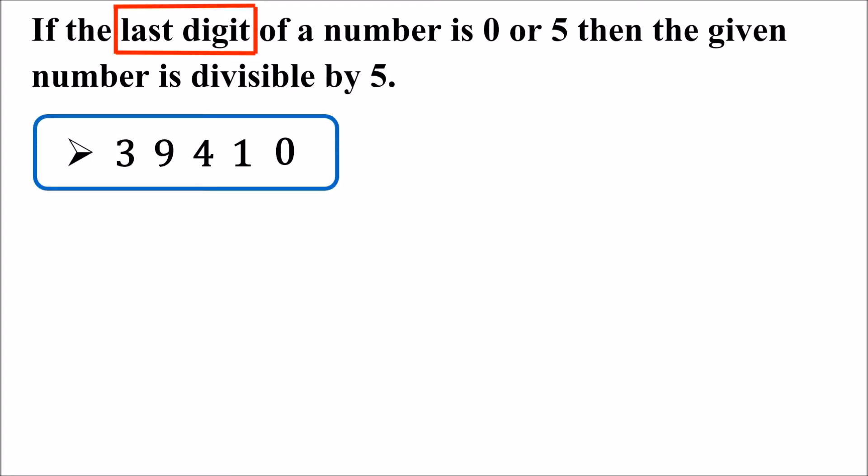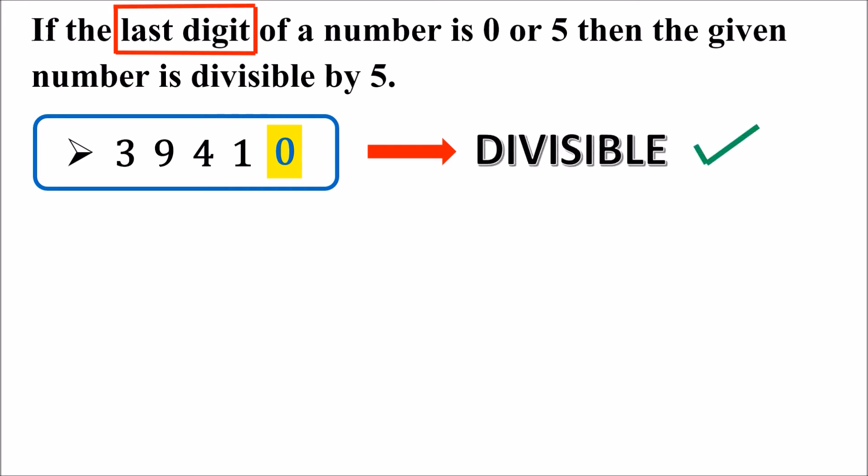Is this number divisible by 5? To know whether this number is divisible by 5 or not, we need to look at the last digit of this number. Can you see what the last digit of this number is? It is 0. If the last digit of any number is 0, then the given number is divisible by 5. Hence, the given number is divisible by 5.